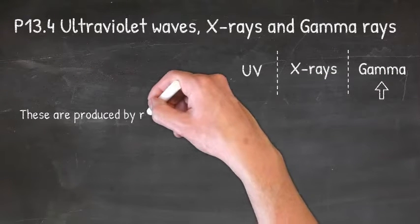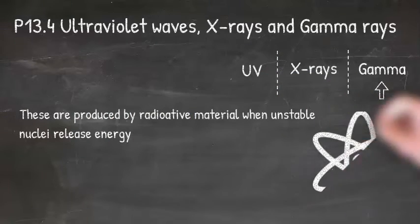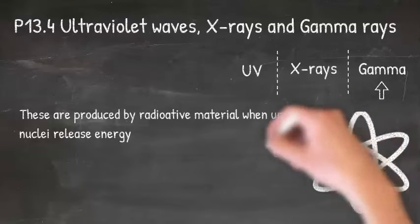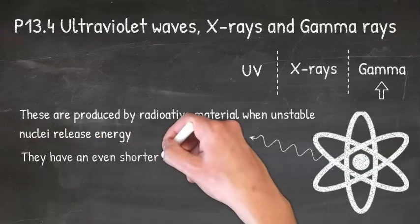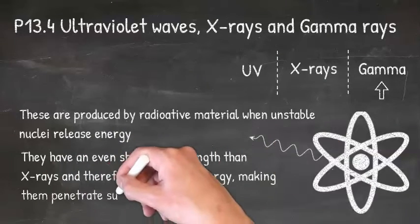Okay, gamma rays. These are made differently to X-rays. They are produced by radioactive material when unstable nuclei release energy. They have an even shorter wavelength than X-rays and therefore carry even more energy, making them penetrate substances further.